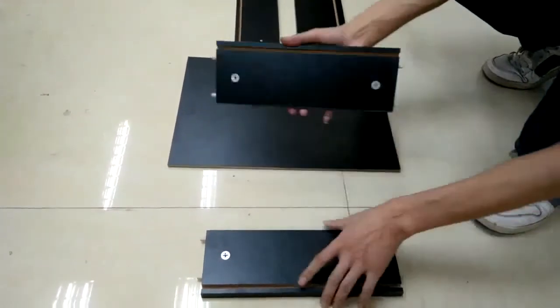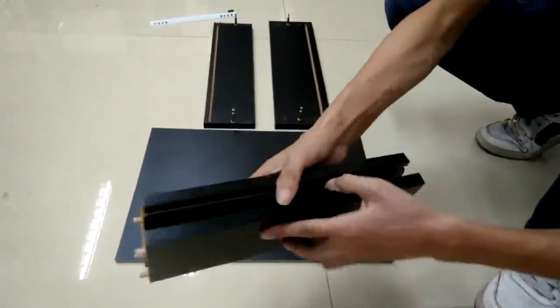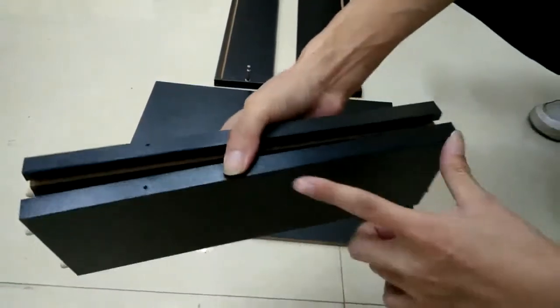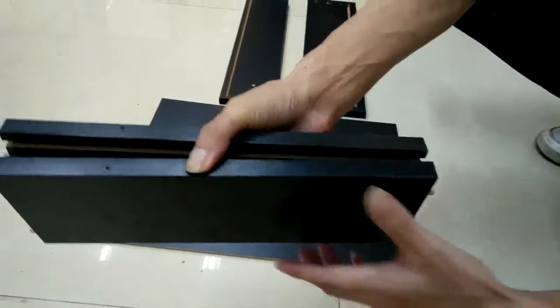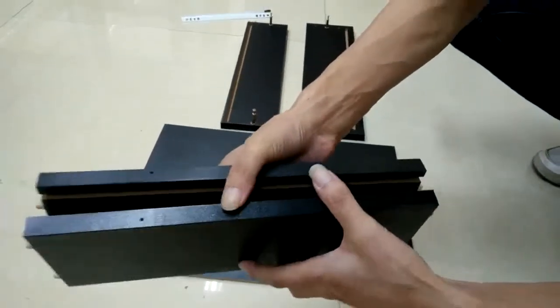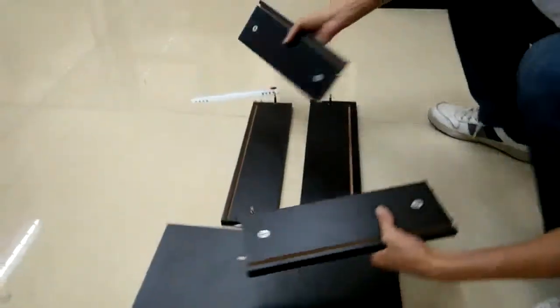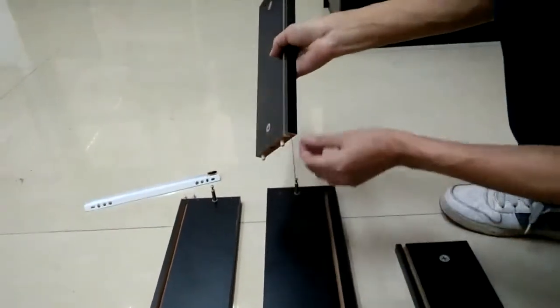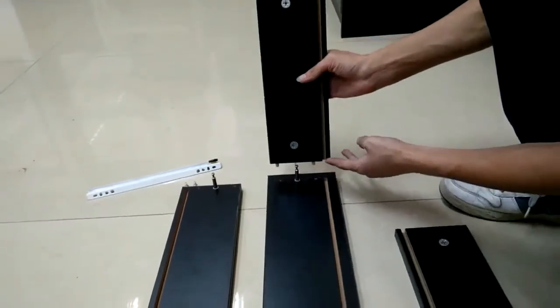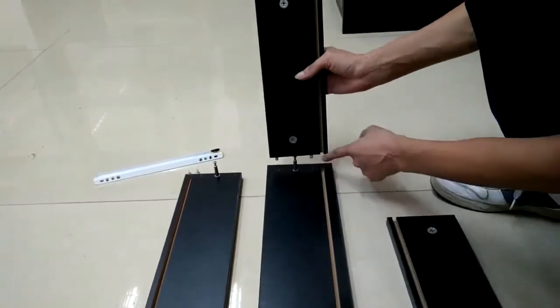Once you install that, you can then identify where the pilot hole is—that's for the glides. Make sure they face the right direction, and then the slots are matching against slots to be perfectly lined up.